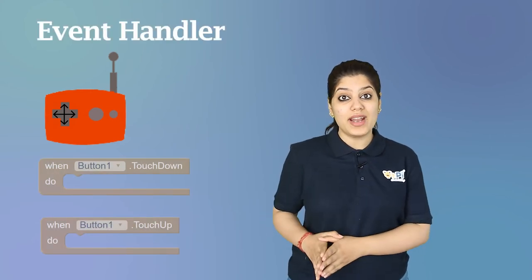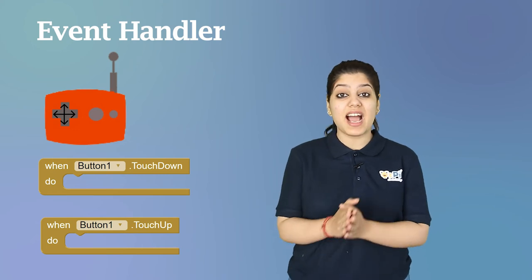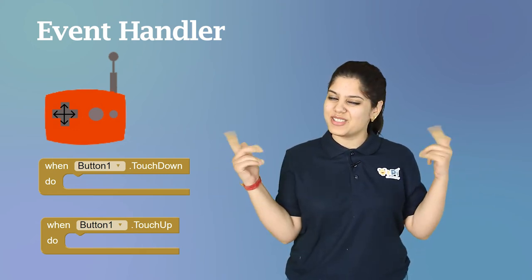Now let's take a look at an event in Go To Play. We've all used the RC car and pressed the button forward to move the car in the forward direction. Here, we use event handlers called when.touchdown and when.touchup. These are used to check if a button is pressed or not. Based on whether the button is pressed, different events are called and different tasks are performed accordingly.